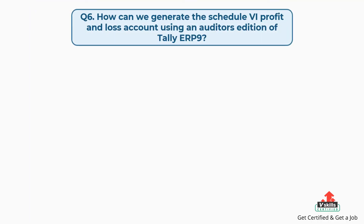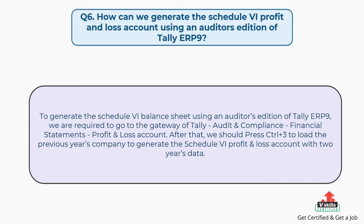Question number six: how can we generate the Schedule VI profit and loss account using an auditor's edition of Tally ERP9? To generate the Schedule VI balance sheet using an auditor's edition of Tally ERP9, go to the gateway of Tally, then audit and compliance, then financial statements, then profit and loss account. After that, press CTRL plus 3 to load the previous year's company to generate the Schedule VI profit and loss account with two years' data.